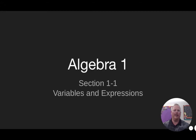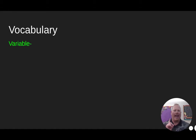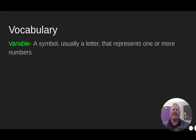Section 1.1 is about variables and expressions. What's the difference between algebra and any other kind of math — calculus, geometry, arithmetic? The one thing that makes algebra different is it introduces the concept of a variable — something we don't know what it is, but we put a letter as its placeholder. A variable is a symbol, usually a letter, that represents one or more numbers.